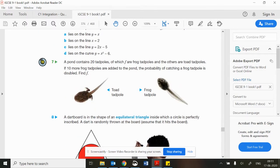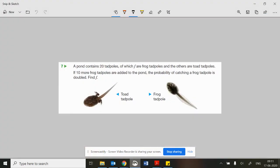So question seven, prepped it up here to start off with, let's just read it through. It says a pond contains 20 tadpoles, of which F are frog tadpoles and the others are toad tadpoles. Okay, so I'm already thinking this.